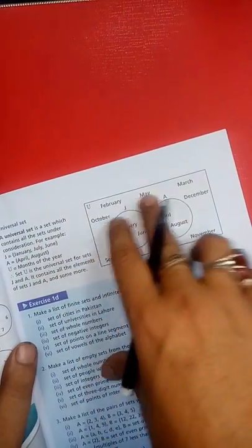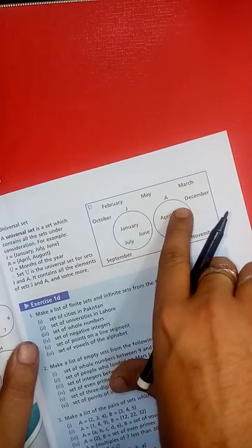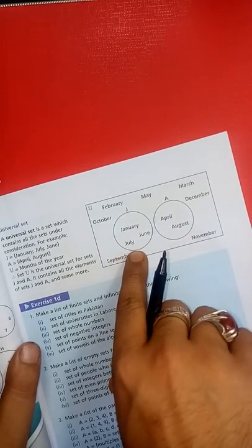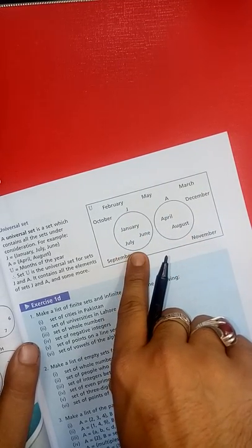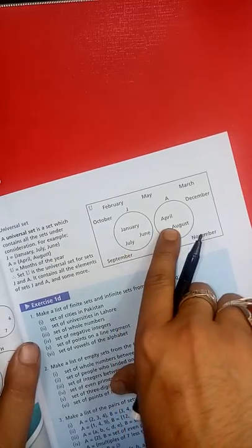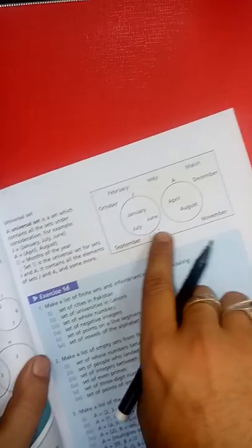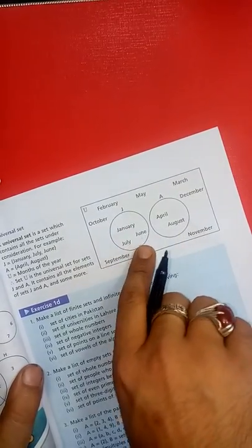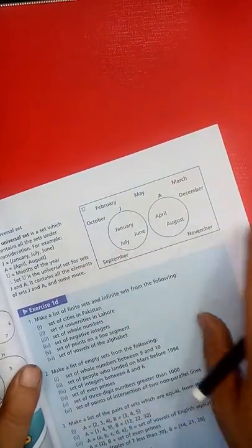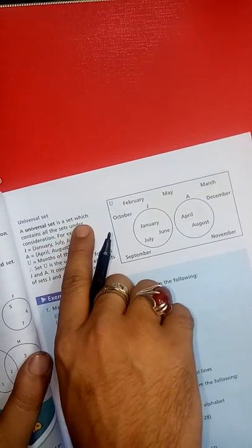We have the universe, where everything lies: galaxy, sun, moon, earth, every planet. Similarly, universal set is a set where all other sets lie within. You can draw a rectangle and inside make different sets.